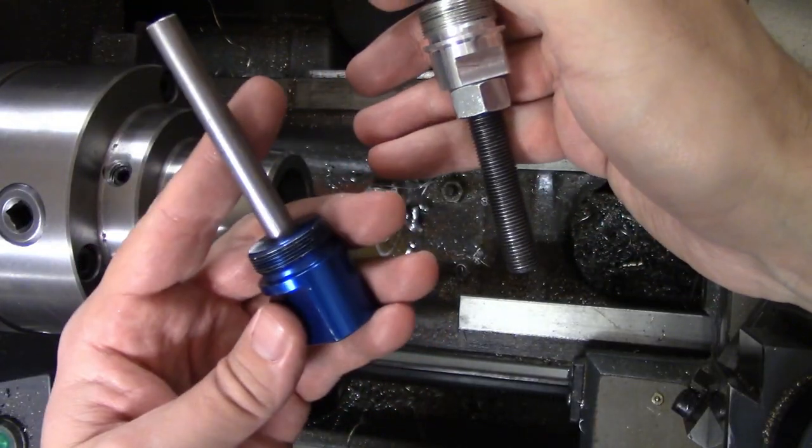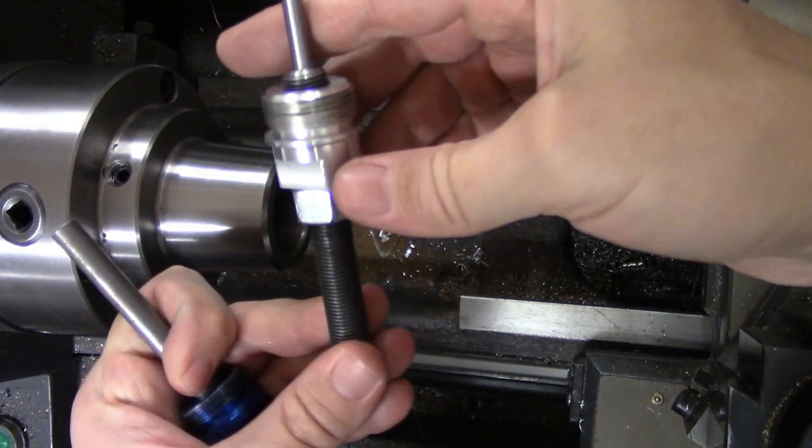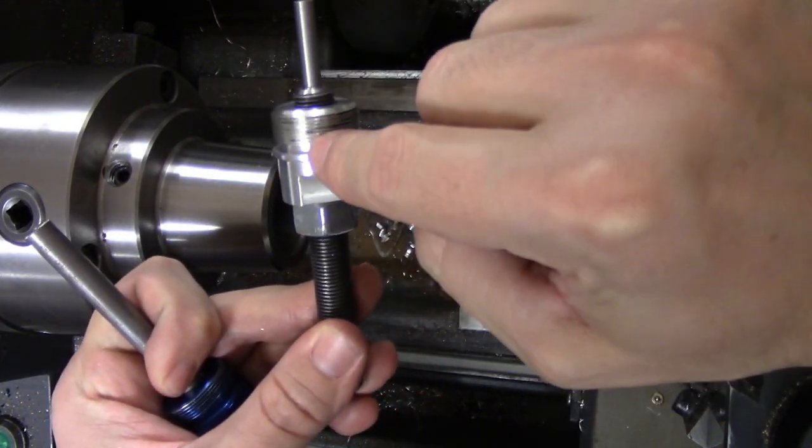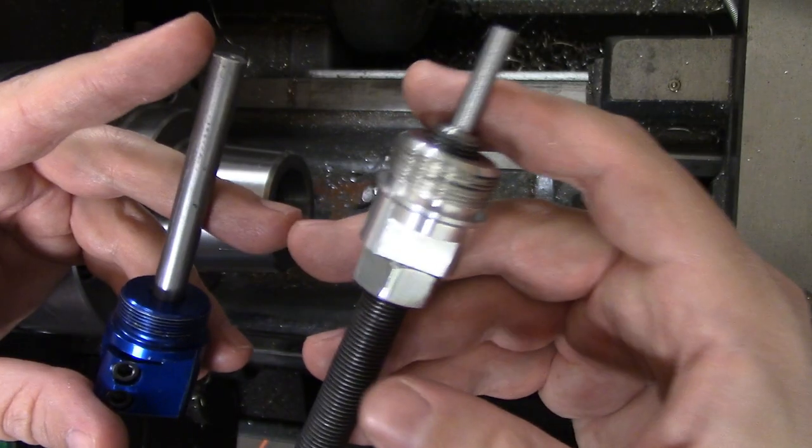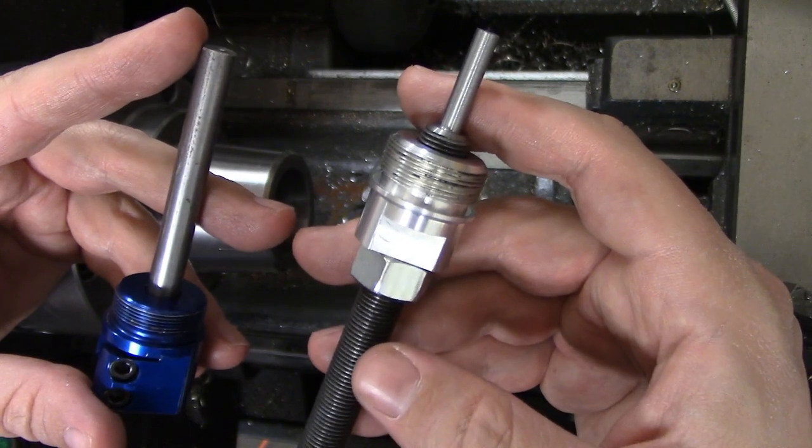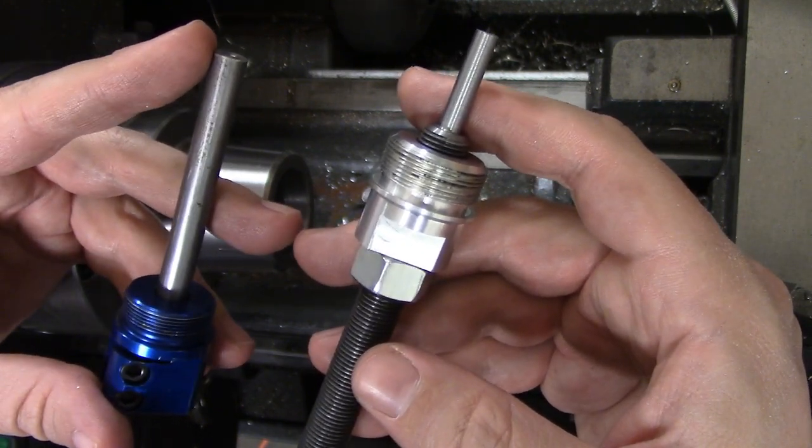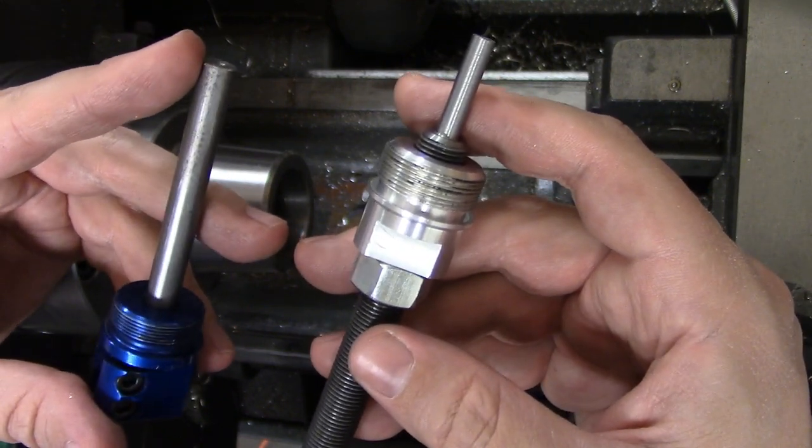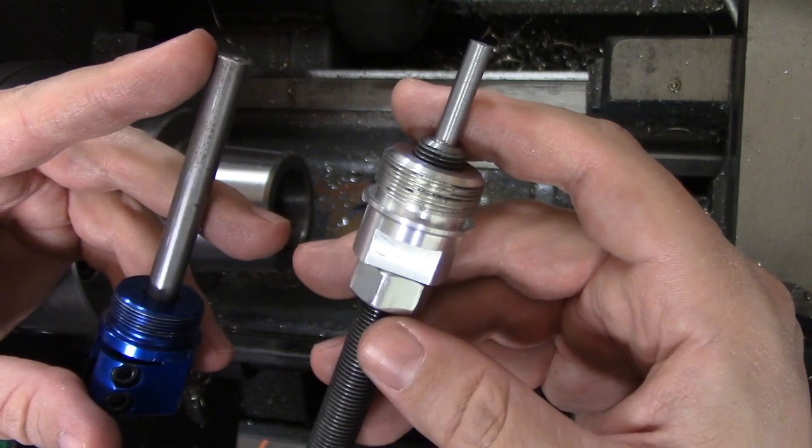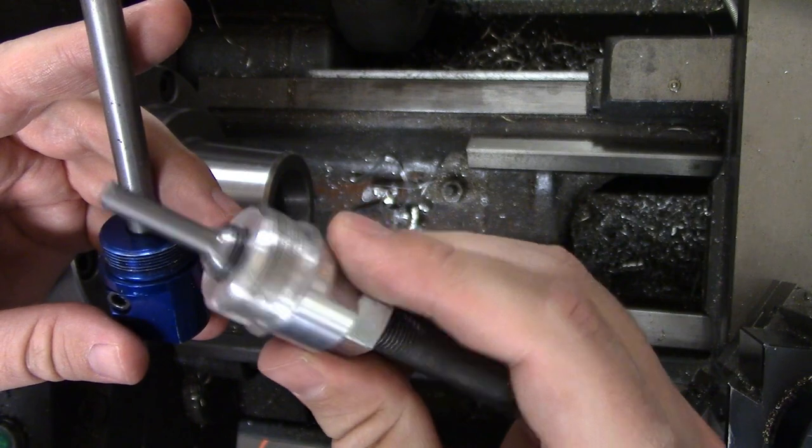Collet stops are readily available commercially, and of course, you can make one yourself. I have a two-part video series on making this one. I'll put a link up here in the corner. Of course, 5C collets are not the only collets that are out there. There are plenty around that are both larger and smaller than 5Cs. And while some may have commercially available collet stops, that's not always available. So you may have to make one yourself if you want to use a collet stop.